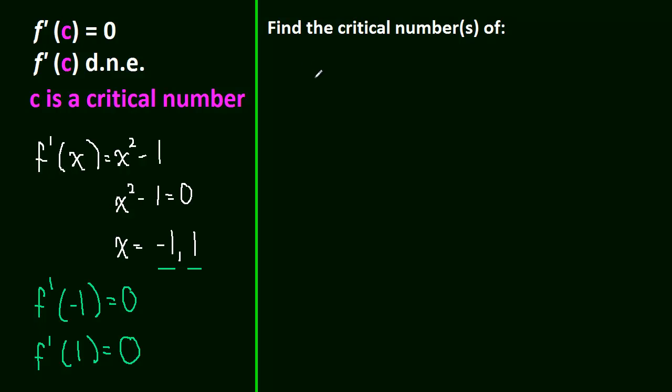So, let's do x to the 2 thirds. This is one we're going to look at in a future video, but let's just find the critical numbers right now. So, the derivative of this is equal to 2 thirds x to the negative 1 third, which rewritten is 2 over 3 times the cubed root of x. So, when is this equal to 0? Never, right? We have a constant in the numerator.